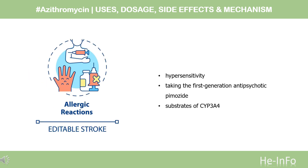Azithromycin is contraindicated in patients with a history of severe hypersensitivity — e.g., anaphylaxis or Stevens-Johnson syndrome — to azithromycin or another macrolide antimicrobial. Clinicians should be cautious regarding concomitant use of azithromycin and other medications that prolong the QTc interval, e.g., antipsychotics. Azithromycin is contraindicated for patients taking the first-generation antipsychotic pimozide.